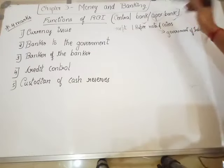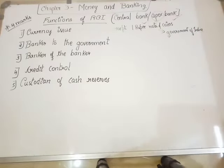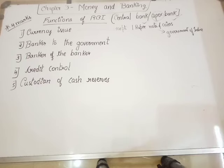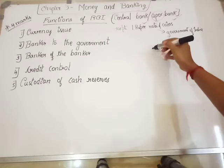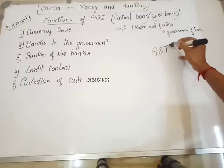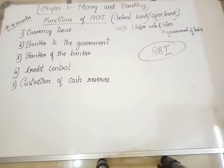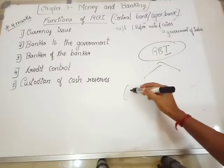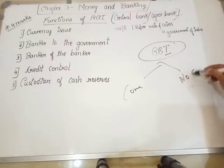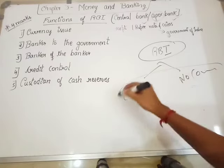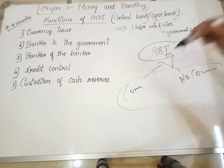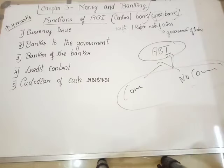We also call it the Apex Bank. Apex means something which is at the top, the topmost position. Since RBI is at the top of all banks — if you see the structure of banks, RBI comes first at the top, then we have commercial banks, non-commercial banks, and so on. All banks are regulated and monitored by RBI. That is why we call it the Apex Bank.